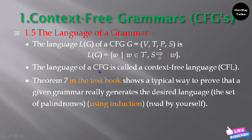The language of a context free grammar is called a context free language, CFL. You can look at Theorem 7 in the textbook, which shows the typical way to prove that a given grammar really generates the desired language.